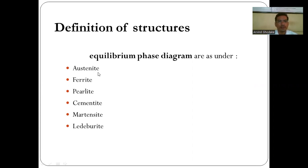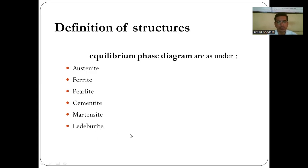Austenite phase is denoted by the letter gamma. Ferrite exists in two forms: alpha ferrite and delta ferrite. Pearlite is the combination of ferrite and cementite, that is alpha plus Fe3C. Cementite is Fe3C. These are the various structures or phases present in the iron-carbon equilibrium diagram, which is applicable for steel and cast iron.